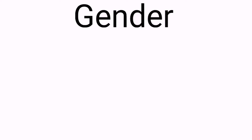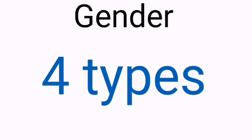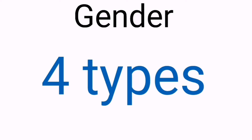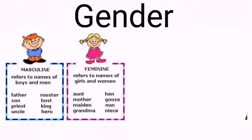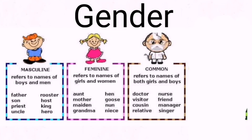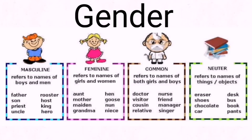Hello children. Today we are going to study about gender and its types. There are four types of gender: masculine gender, feminine gender, common gender, and neuter gender.